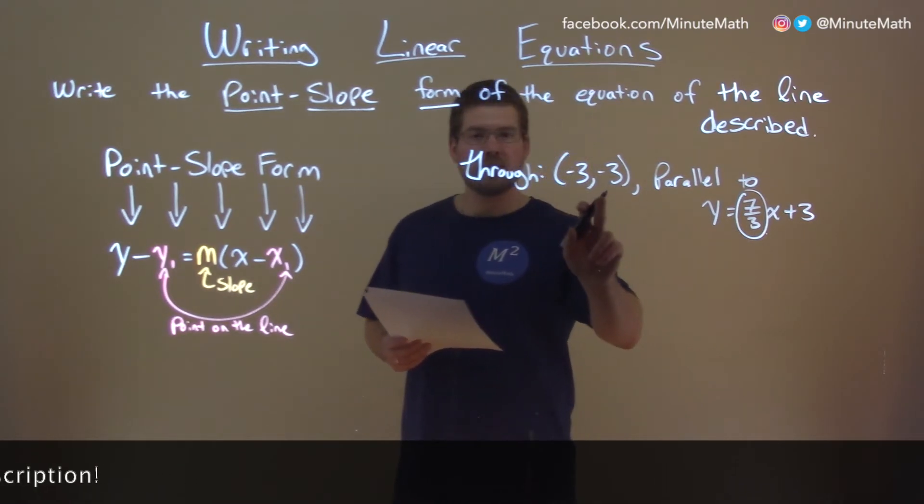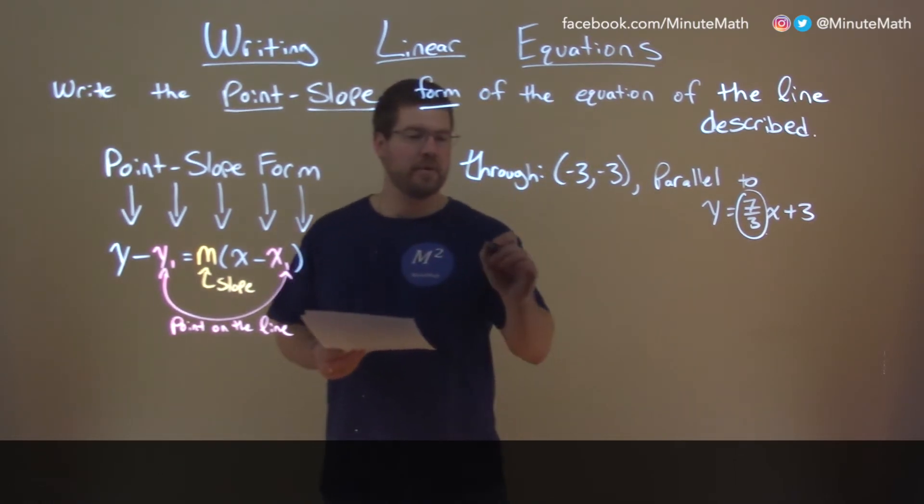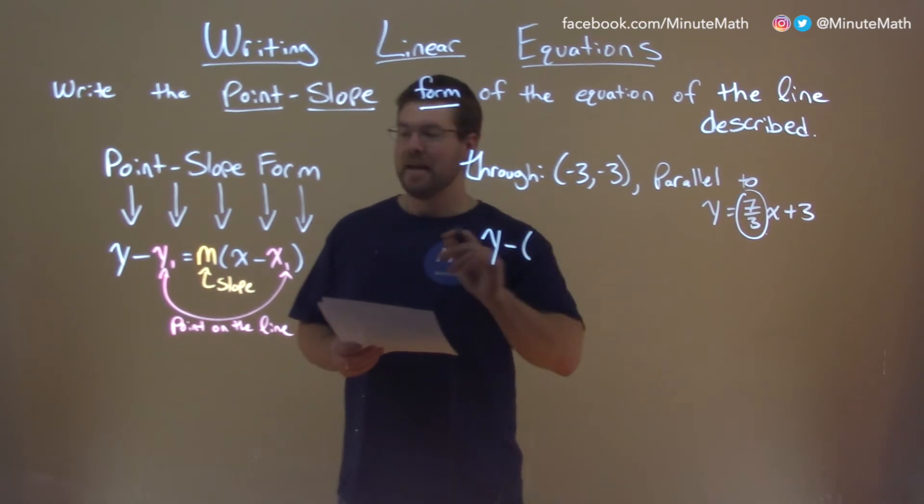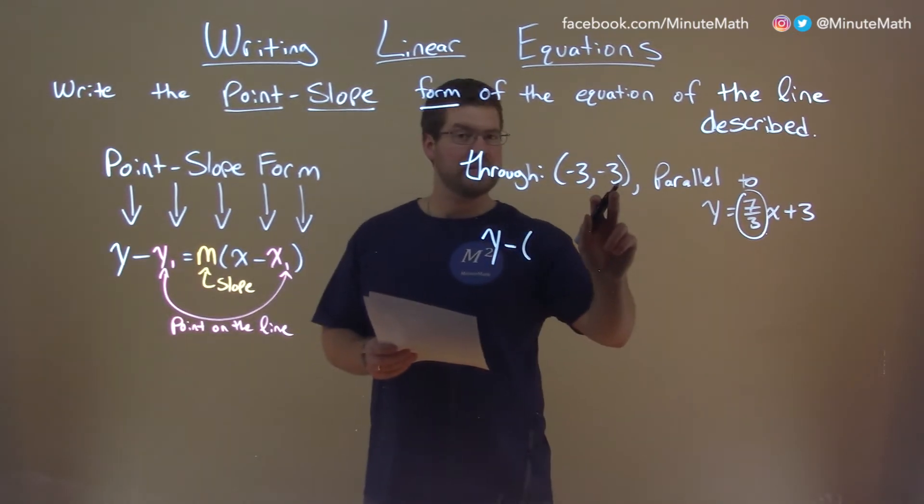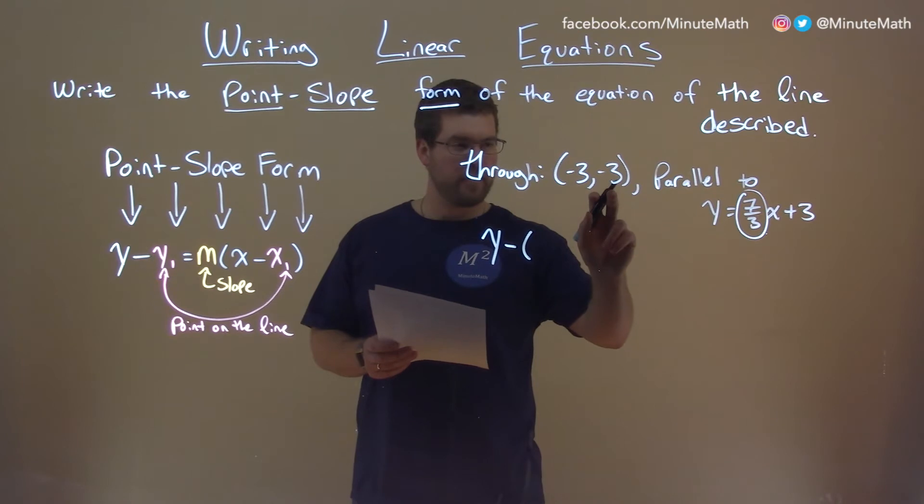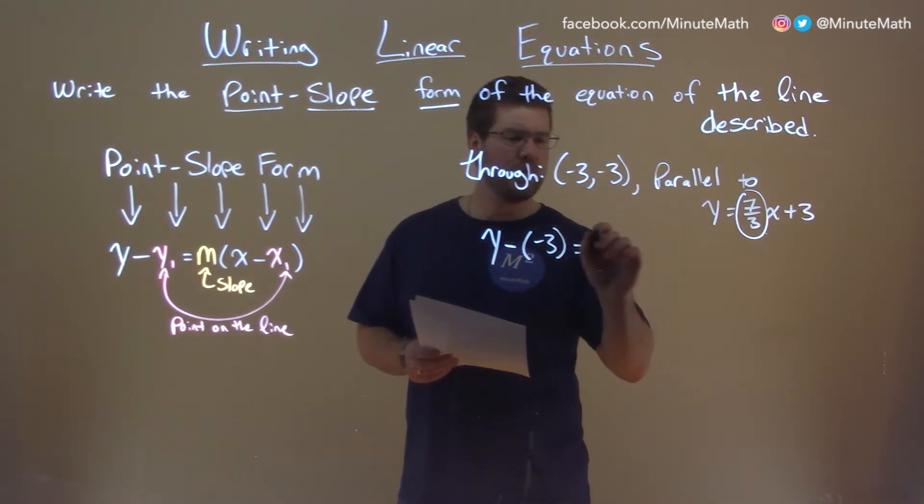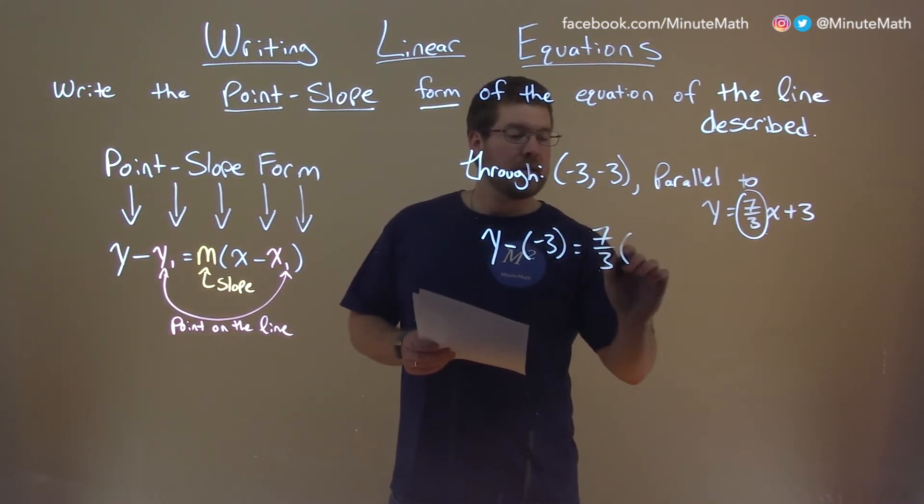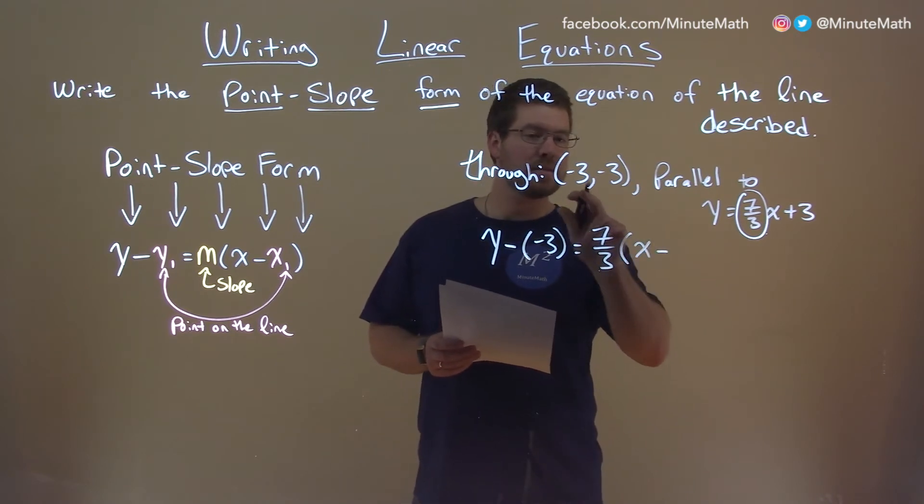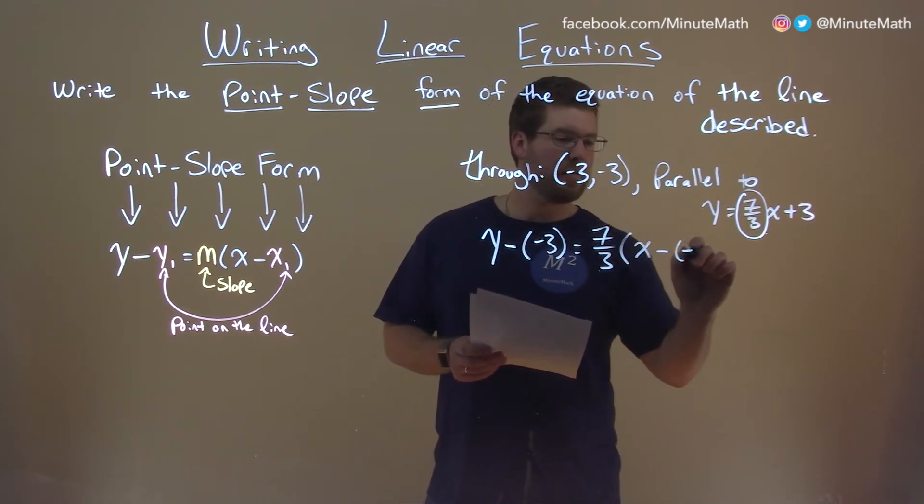So we use that information plus the point they gave us into our formula. y minus the y-coordinate, which here is the same as the x, but make sure we know where we're getting it from, negative 3, equals our slope, 7 thirds, times x minus our x value, negative 3 again.